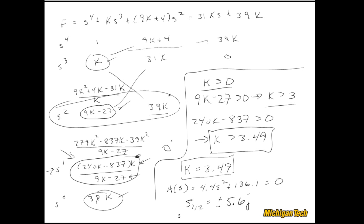To summarize: starting with a plant and system type requirements, we tried several control laws and arrived at K(s + a)/s. This type of controller is called a PI controller, which we'll explore in another video. With this PI controller we can stabilize the system and meet the system type goals. Now let's explore different values of K in MATLAB/Simulink.